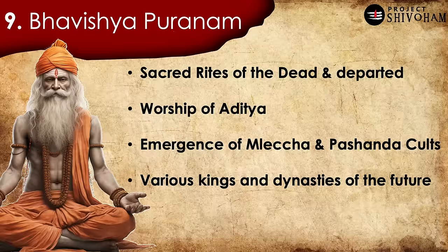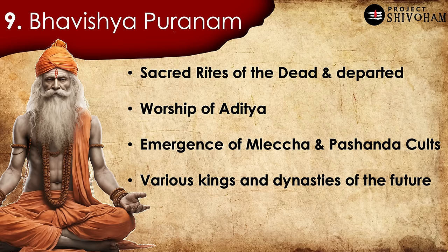Number 9, Bhavishya Puranam: as the name suggests, it is mostly about prophecies of the future. It talks about sacred rites for the dead and departed, the worship of Aditya or Surya, and through this Puranam Vyasa Maharshi prophesies that in Kali Yugam there will be an emergence of Mleccha and Pashanda cults which will create havoc around the world, unleashing death, destruction, and suffering on people. It also elaborates about the various kings and dynasties that would be coming in the future.